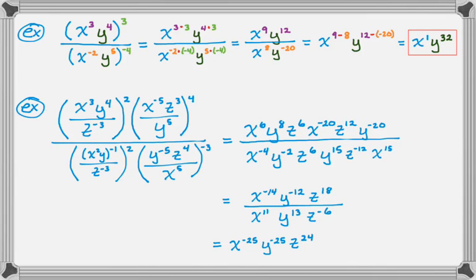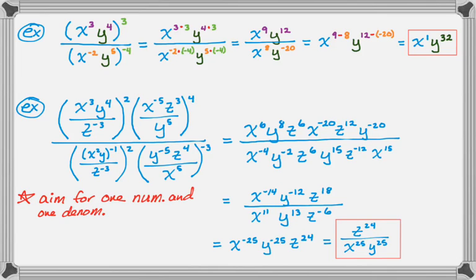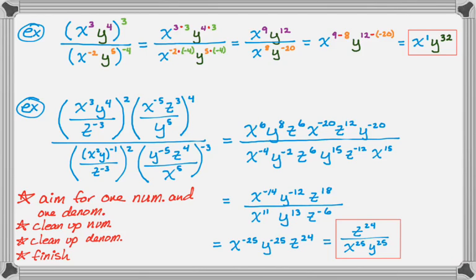You want to write the answer as a single fraction with only positive exponents. We have x to the negative 25th and y to the negative 25th — those are in the numerator with negative exponents, so I move them to the denominator with positive exponents — giving z to the 24th over x to the 25th times y to the 25th. To summarize: the first step is to aim for one numerator and one denominator, rewriting using the rules of exponents. Then clean up just the numerator, then just the denominator, and finally finish the problem. That's two examples of properties of exponents that are a little more complicated. I hope you found this helpful — good luck.